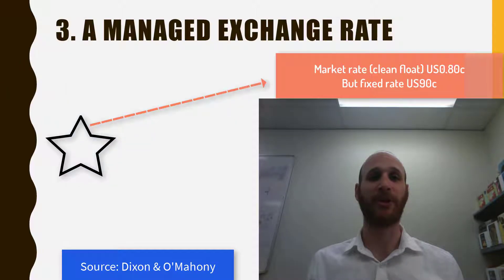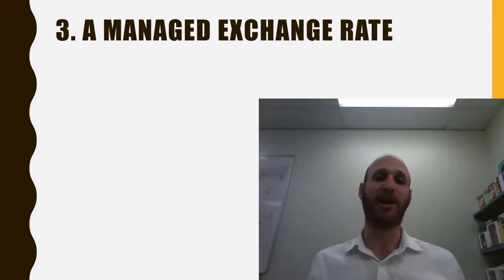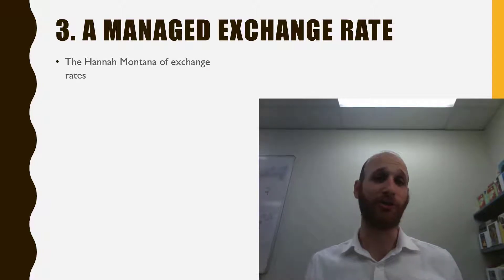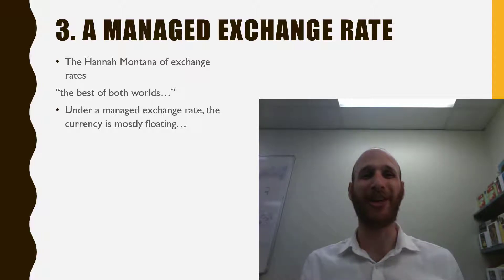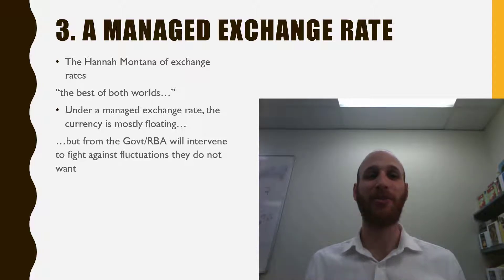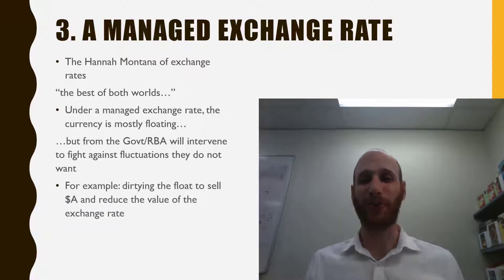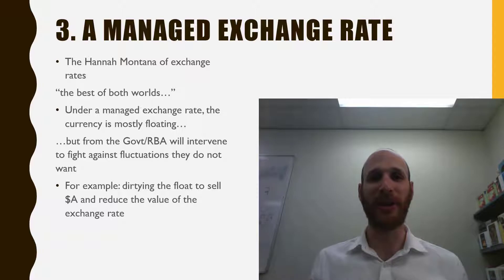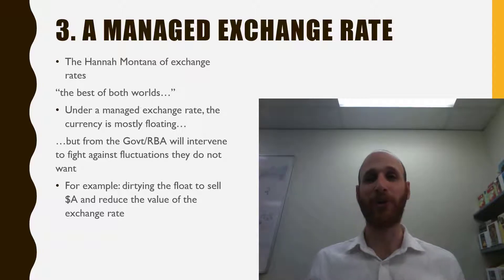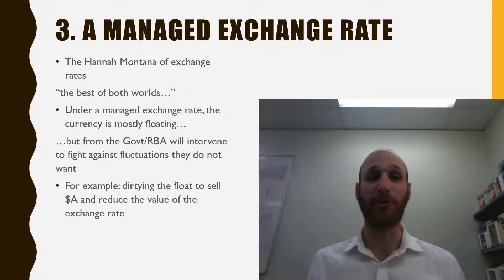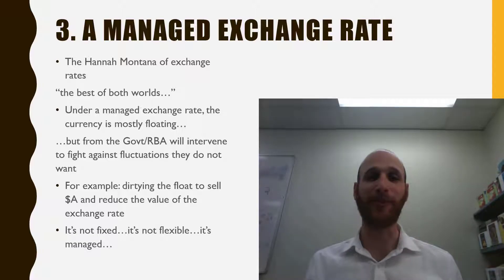Our final type is a managed exchange rate. As I said — in a fairly tortured analogy — it's like the Hannah Montana of exchange rates: the best of both worlds. Under a managed exchange rate, the currency is mostly floating, but from time to time the government will intervene, fighting against fluctuations they don't want. For example, the RBA might jump in, dirty the float, sell Australian dollars and reduce the value of the exchange rate, which would make exports more competitive. So we're generally floating, but from time to time the RBA jumps in and either reduces or increases the value of the currency. It's not fixed, it's not flexible — it's managed.